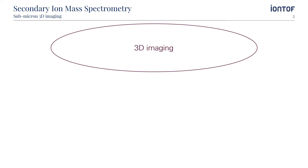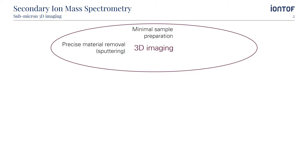Mass spectrometry imaging is a powerful technique for sample characterization. However, most MSI modalities lack the ability to perform high-quality 3D imaging. The reason is that certain prerequisites need to be fulfilled: precise removal of material, minimal sample preparation, high lateral and depth resolution, and very high speed in imaging.